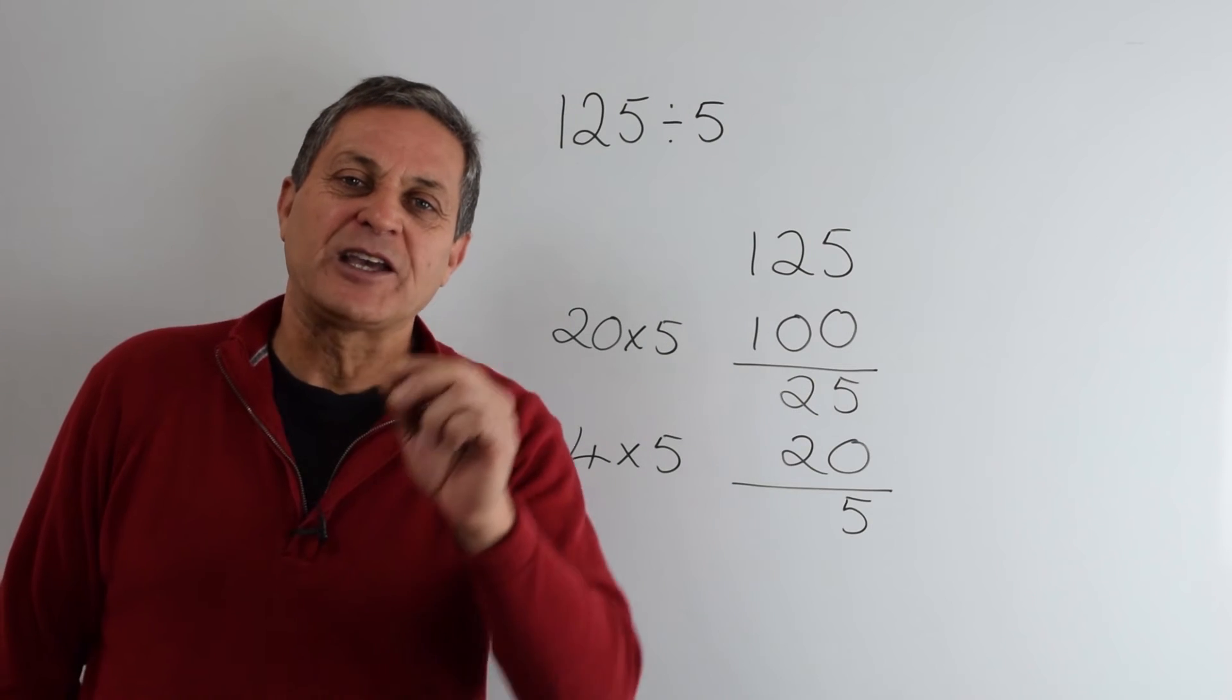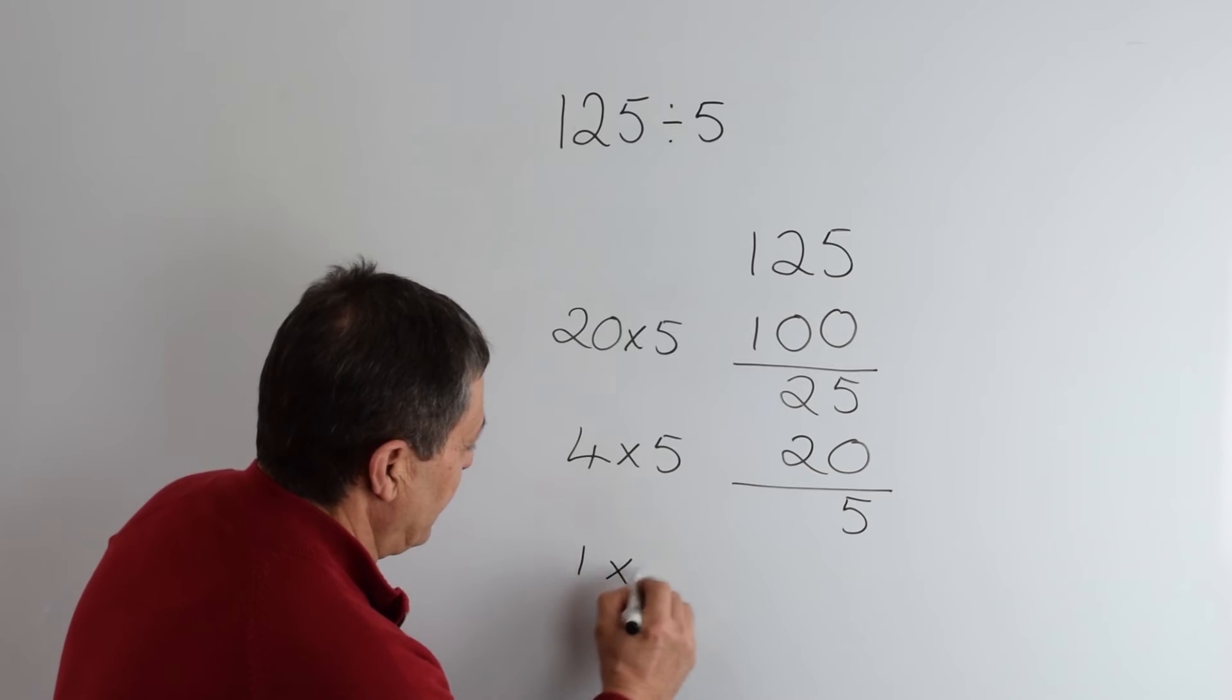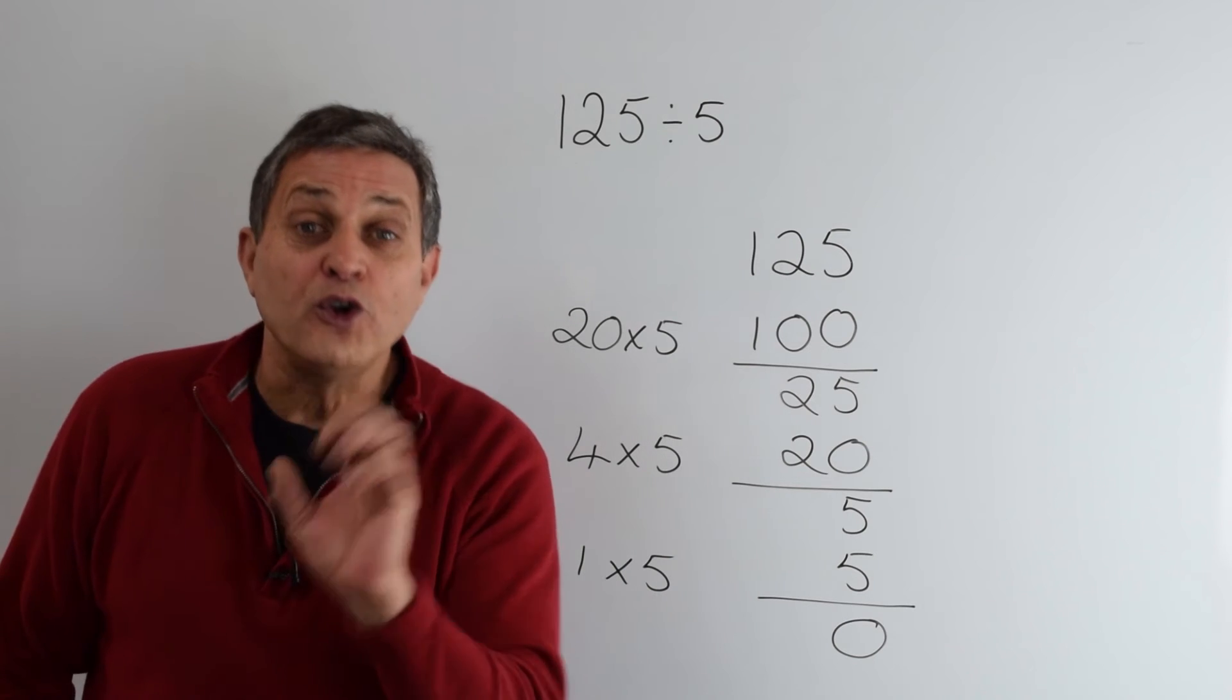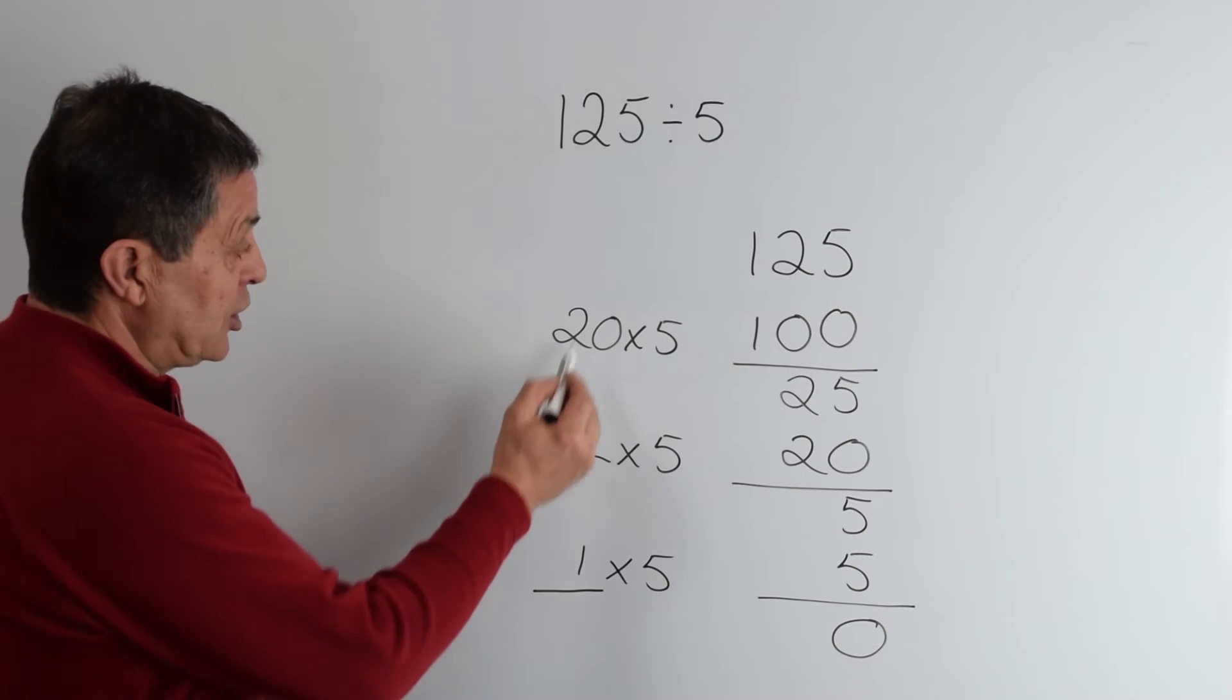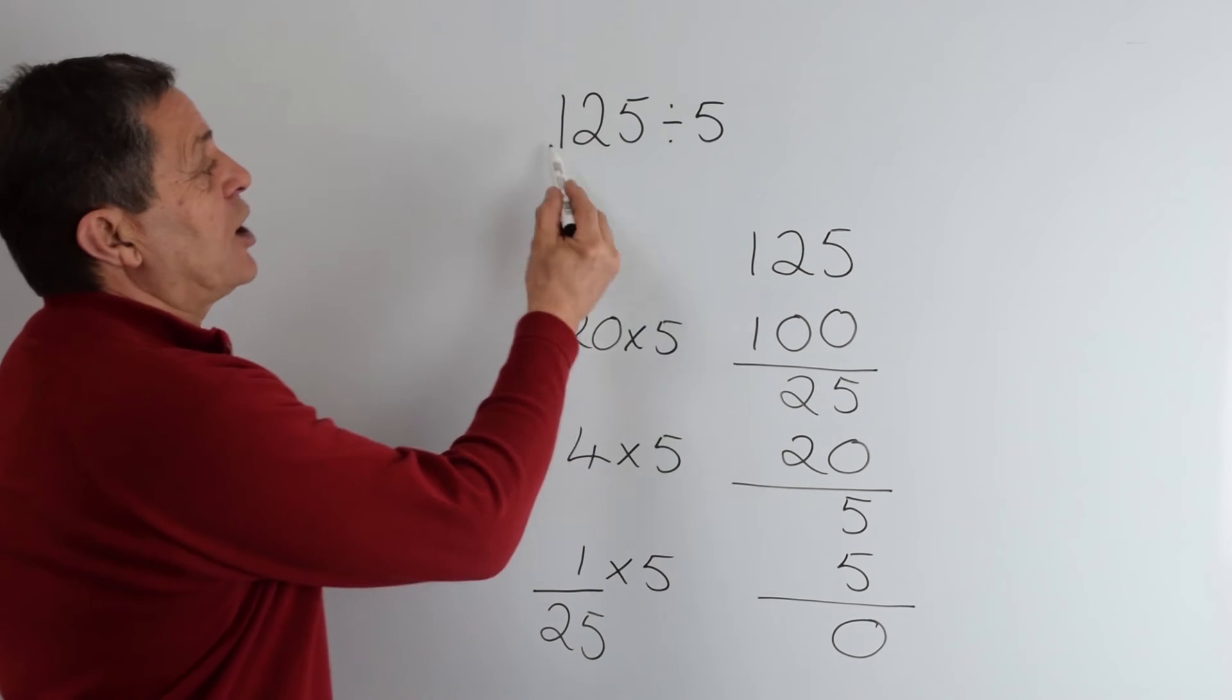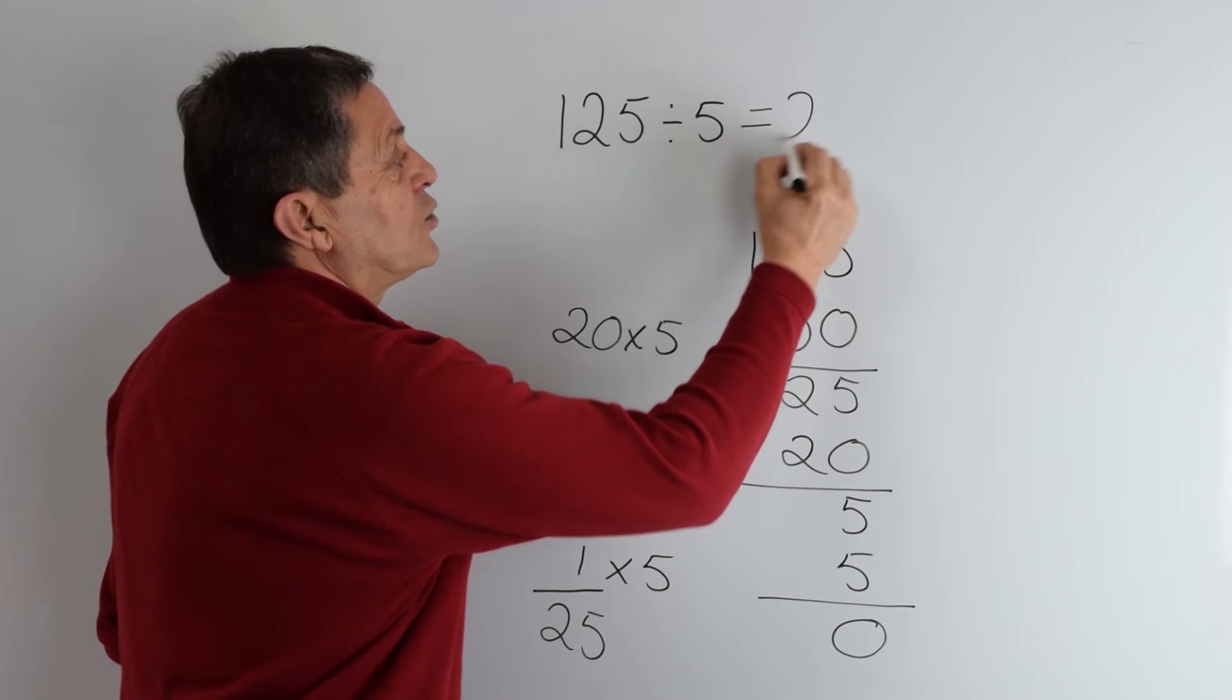And of course the last chunk we can see is 5, 1 times 5 is 5. Take that chunk away, and we're left with 0. All you need to do now is add up your multiples. 20, 4, 1 more is 25. So the answer to 125 divided by 5 is 25.